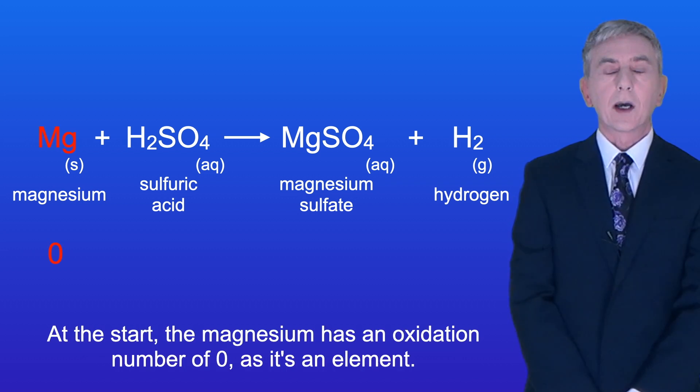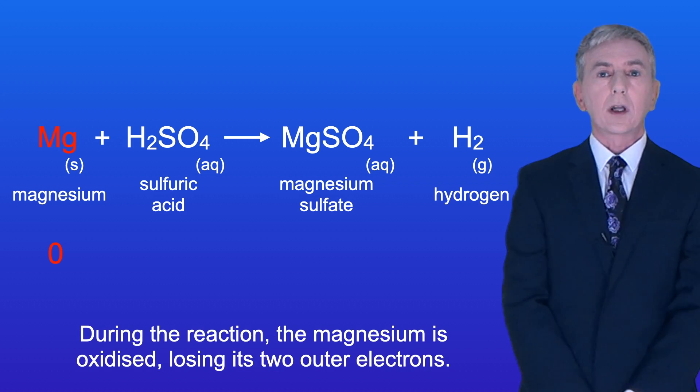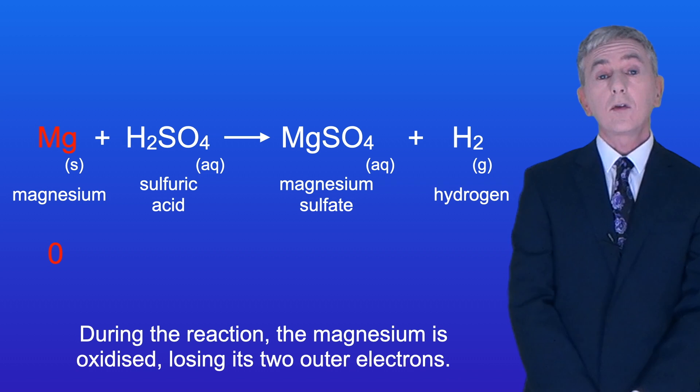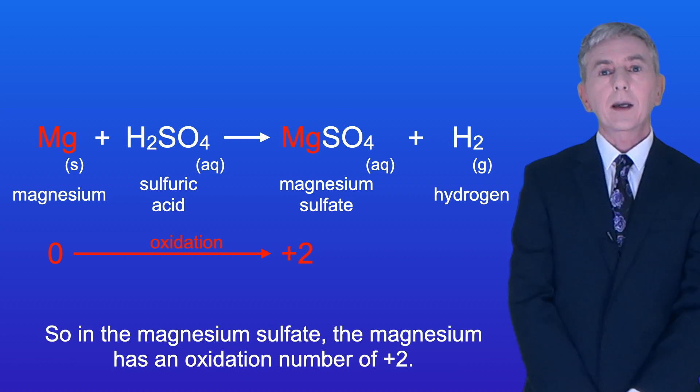At the start the magnesium has an oxidation number of zero as it's an element. During the reaction the magnesium is oxidized losing its two outer electrons. So in the magnesium sulfate the magnesium has an oxidation number of +2.